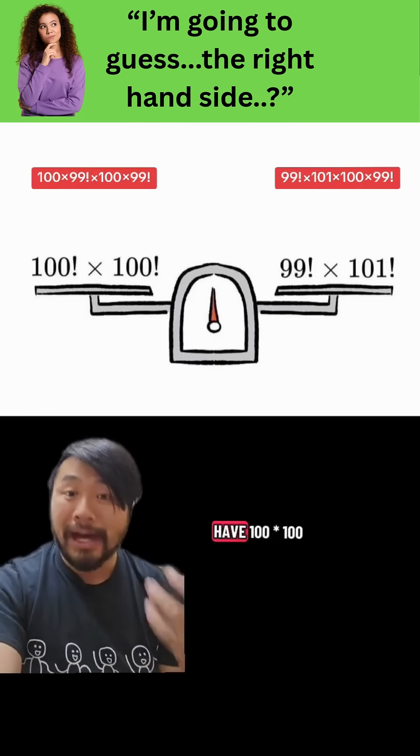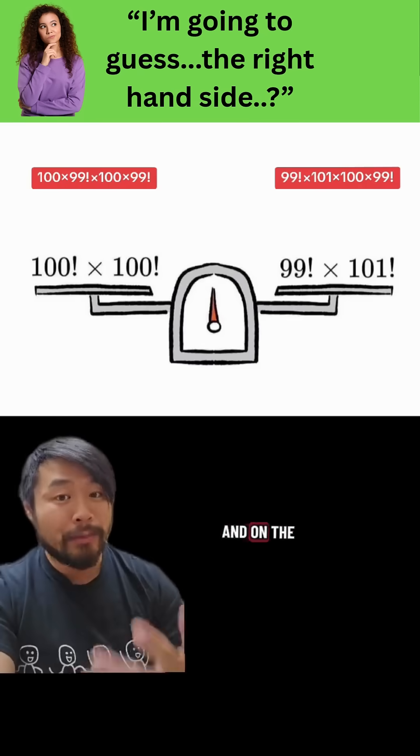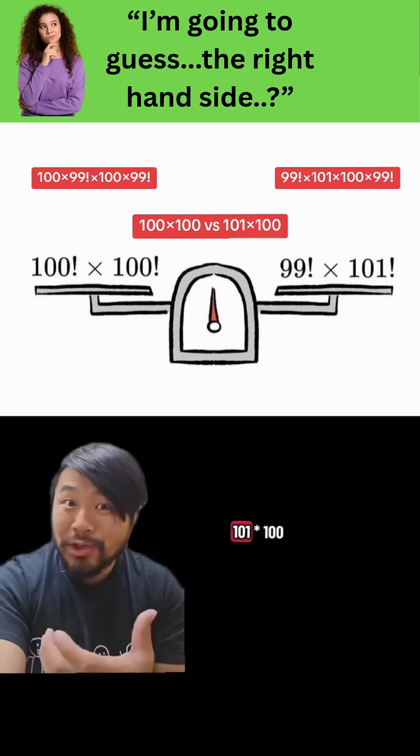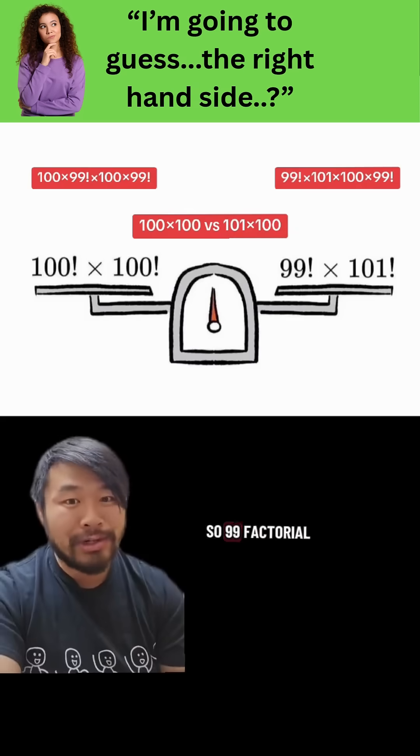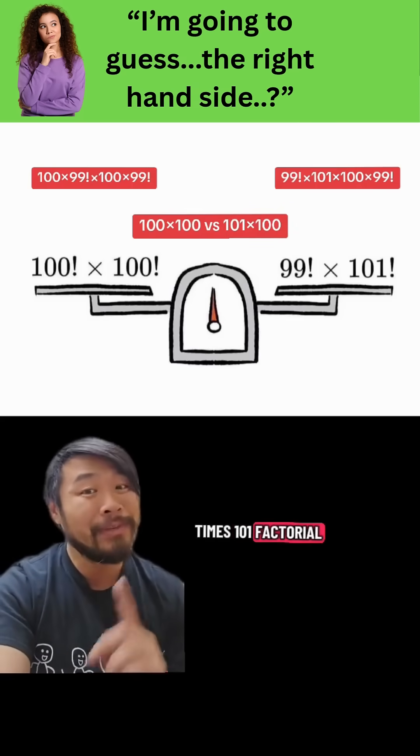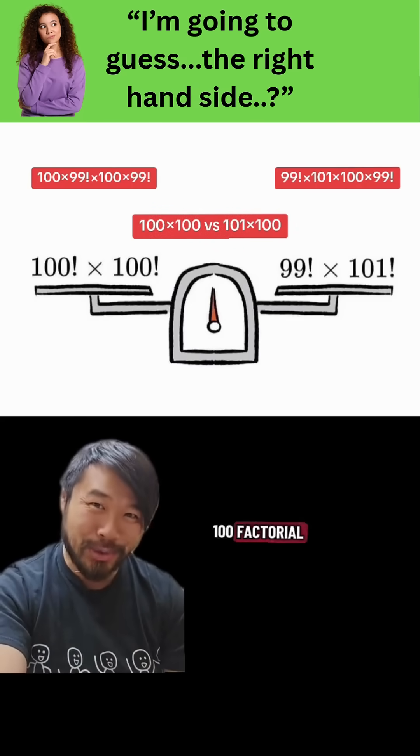Well, on the left side we have 100 times 100, and on the right side we have 101 times 100. 101 times 100 is larger than 100 times 100, so 99 factorial times 101 factorial is greater than 100 factorial times 100 factorial.